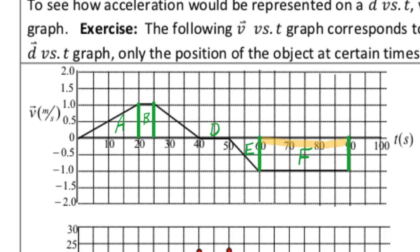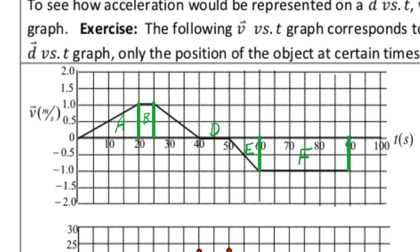Finally, in section F, we're moving at negative one at the beginning and still at negative one at the end — constant negative velocity, no acceleration. So to summarize: section A is positive acceleration, B is constant motion, C is negative acceleration, D is at rest — and rest is not constant motion, because constant motion requires actual movement at a constant velocity. Section E is negative acceleration, and section F is constant negative motion.